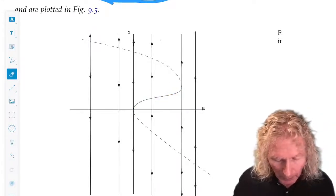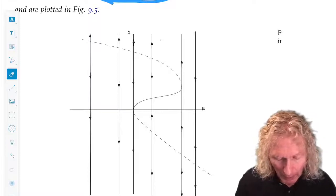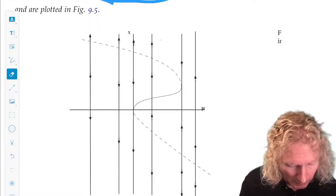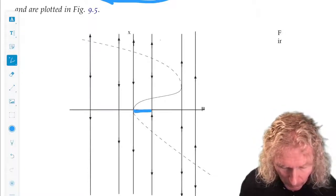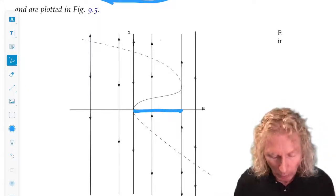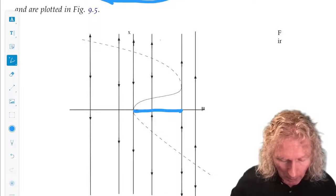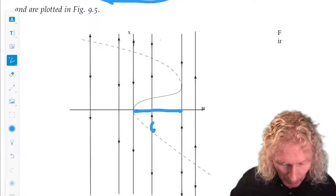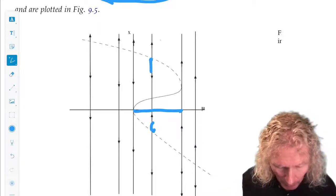You can see dramatic things can happen if you're between the two saddle node points and you pick an initial condition above the lower unstable branch, below the upper unstable branch.